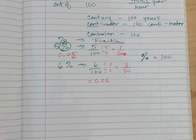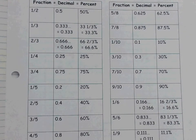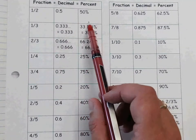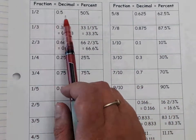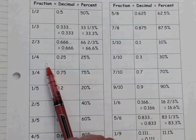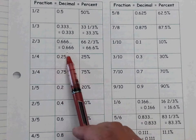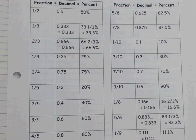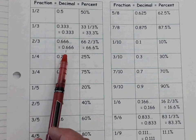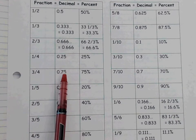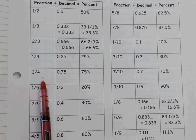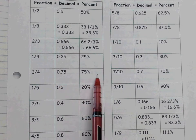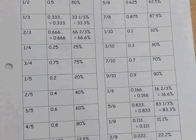Here's a landmark values sheet with the most commonly used fractions, decimals, and percents. One half equals 0.5, which is 50 percent. One quarter equals 0.25 — that's 25 cents, or 25 percent. Three quarters equals 0.75 — that's 75 cents, or 75 percent. These are common ones that are really helpful to memorize.